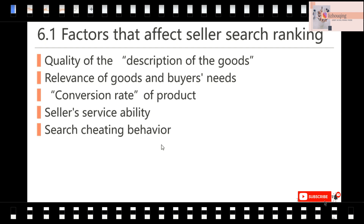There are five factors that affect the seller's search ranking. First, the quality of the description of the goods and the information of the listing. Second, the relevance of the goods and the buyer's needs — that means how well our listing matches what buyers are searching for. For example, if they search for a red coat dress, do you have those keywords in your listing? Third, the conversion rate of your product. Fourth, the seller's service score. Fifth, search cheating behavior also affects your ranking.